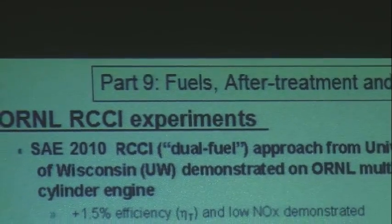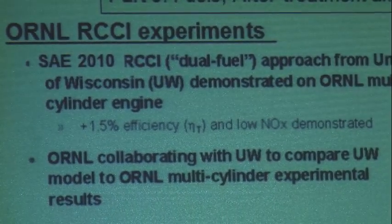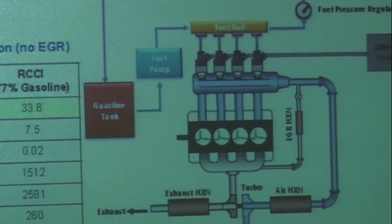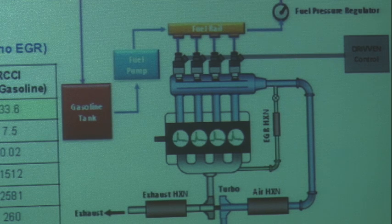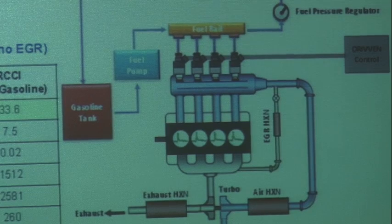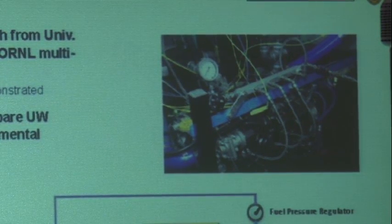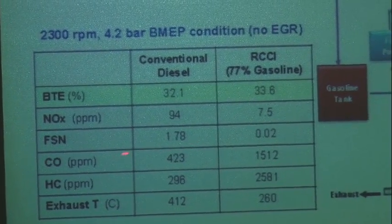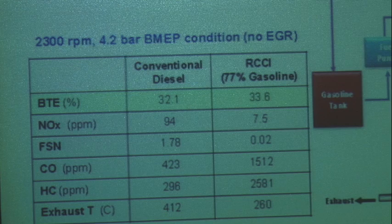Low exhaust gas temperatures in this FTP driving area are a challenge for oxidation catalysts. Catalyst efficiencies need to be over 90%. We recently conducted tests at Oak Ridge showing we can get conversion efficiencies of 98% even with relatively low exhaust temperatures. The Oak Ridge arrangement is fueled with port fuel injection of gasoline and direct injection of diesel, set up with a DOC and a DPF for soot filtration. Testing at 4 bar, 2300 RPM showed RCCI running with 77% gasoline offered improved brake thermal efficiency over conventional diesel, with an order of magnitude lower NOx, two orders of magnitude lower soot, but higher unburned hydrocarbons and CO, and much lower exhaust temperatures — 260°C for RCCI versus 412°C for conventional diesel.